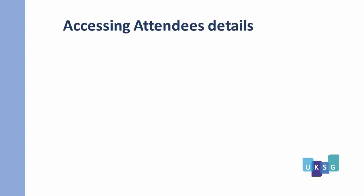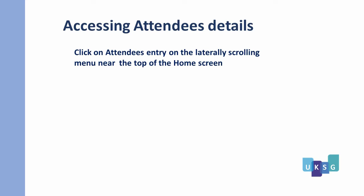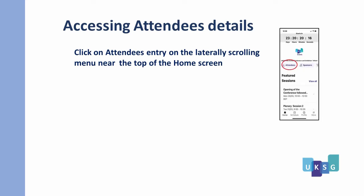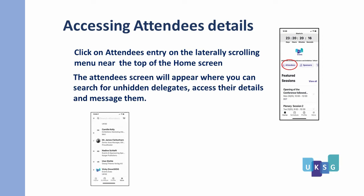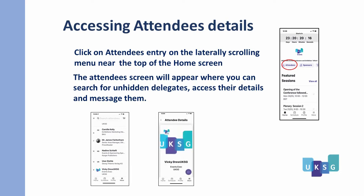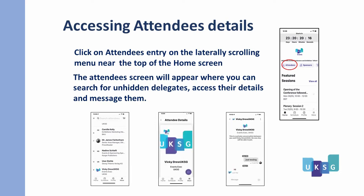Let's look at some of the information we are holding. Click on Attendees on the laterally scrolling menu near the top of the home screen. The Attendees screen will appear where you can search for other delegates, access their details and message them.